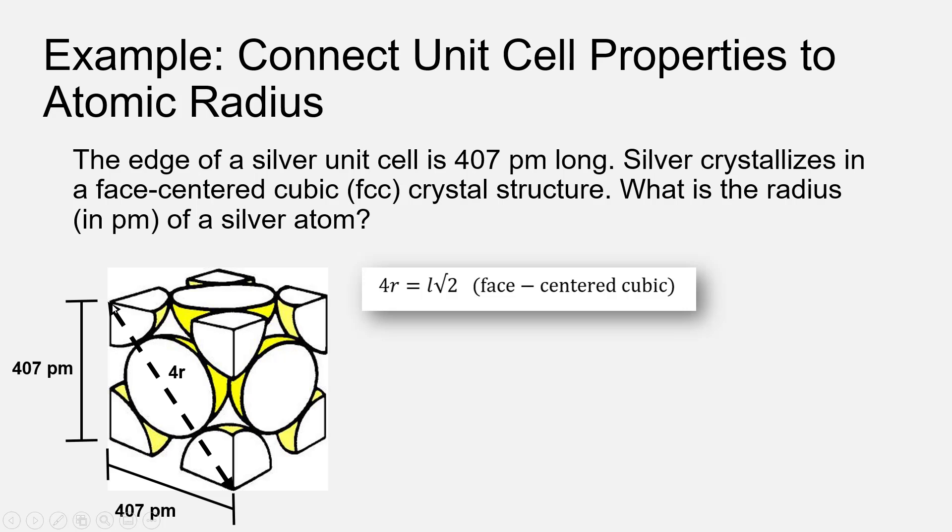So looking at the unit cell from a geometry perspective, we have a square face of the cube, where half of this is a right triangle. So our right triangle is this edge length here, this edge length here, and then the hypotenuse across the square face of the cube.